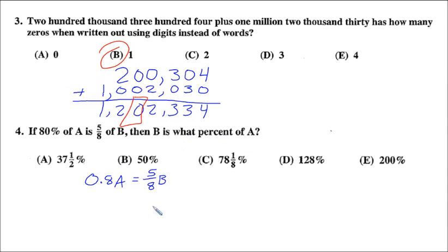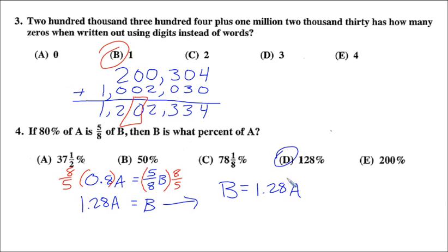Then B is what percent of A? What we want to do is we want to solve now for B in terms of A. We need to cancel out what's happening around B. The inverse, or the opposite of multiplying by 5 eighths, would be multiplying by the reciprocal, which is 8 fifths. If you multiply this side also by 8 fifths, this right-hand side cancels out to B. On the left-hand side, if you multiply 8 fifths times 0.8, and I would suggest just doing that in the calculator, you do get 1.28. We end up with 1.28 A equals B. We can, of course, rewrite this as B equals 1.28 times A, or 1.28 percent of A. 1.28 as a percent is 128 percent, so the answer is C.